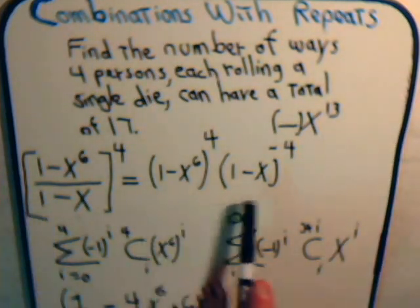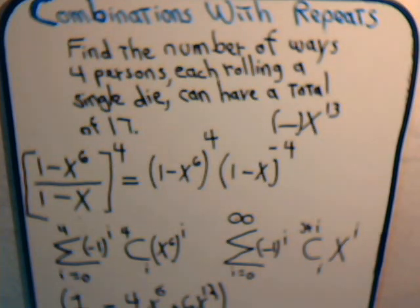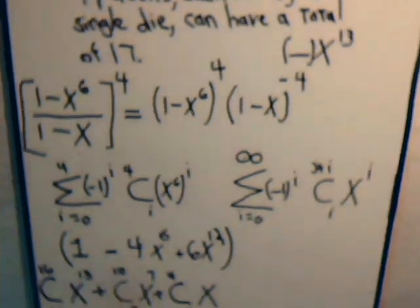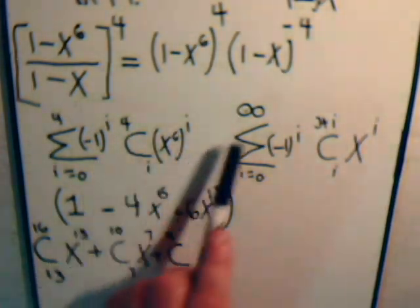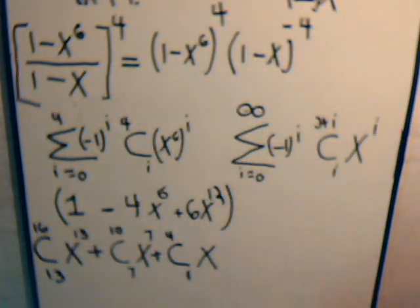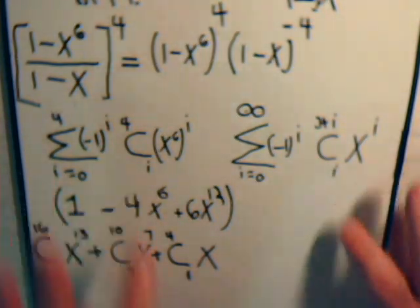And this is just written it like this and then as we've done in previous videos we wrote these out in terms of their respective binomial expansions which gave us this. So now we have to multiply these two together.